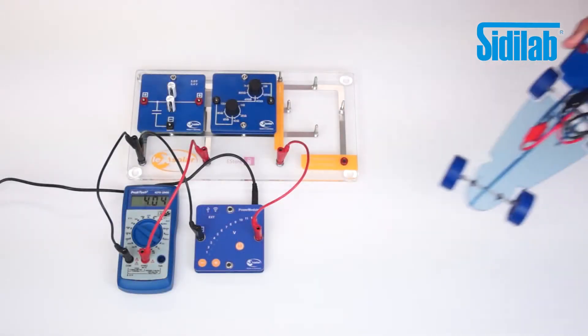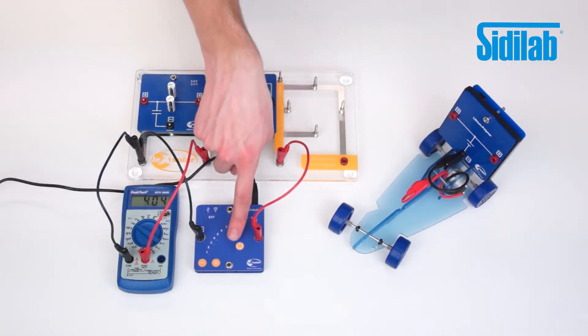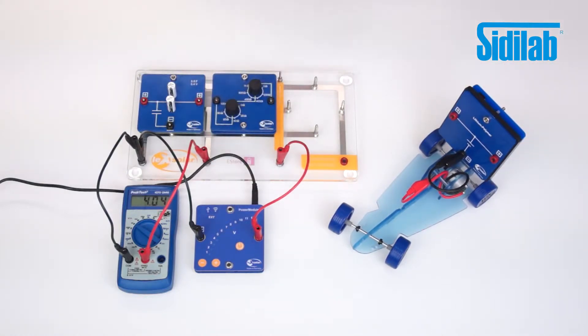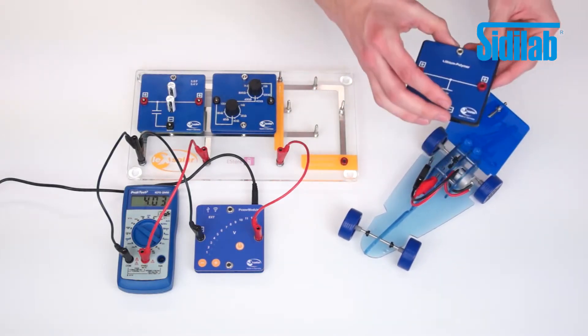Meanwhile the capacitor should be finished loading. Its open circuit voltage is approximately 4.04 volts. It is attached to the car like the previous two batteries and put on the starting line.